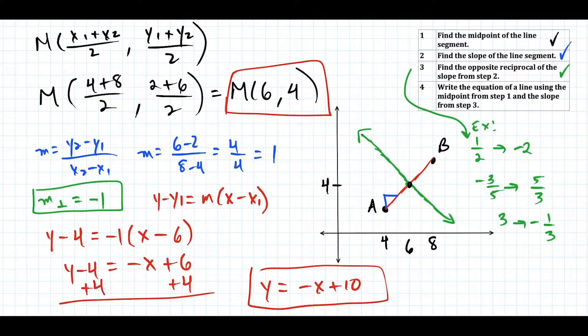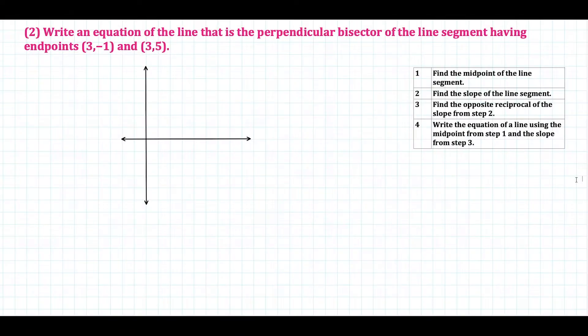If you imagine this line continuing, you can see it heads up to where the y-intercept is — up at 10 on the y-axis. The graph checks out and reinforces our answer.